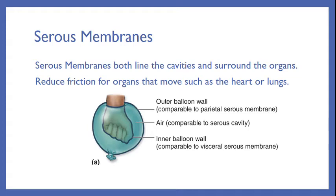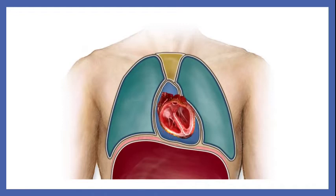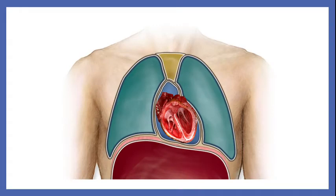Why do we need to bother with the serous membrane? Are organs really moving that much? Your heart is a good example of an organ that is constantly in motion — its thick muscular walls are contracting, causing the heart to shift a little bit in its position. Any time two surfaces rub together, over time we could see friction and abrasion developing. Think about how long your heart has been beating. Without that serous membrane, friction would have eventually worn away part of that heart cavity lining.